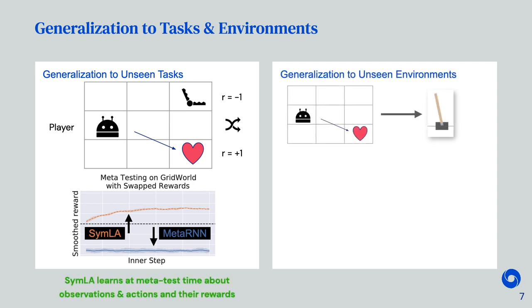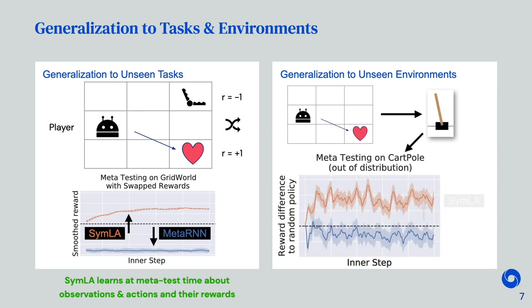We also performed experiments where we meta-train on a grid-world environment and then generalize to CartPole. SymLA still performs learning, increasing the rewards over time, while meta-RNNs are close to a random policy. Thus, SymLA can also generalize to different environments.